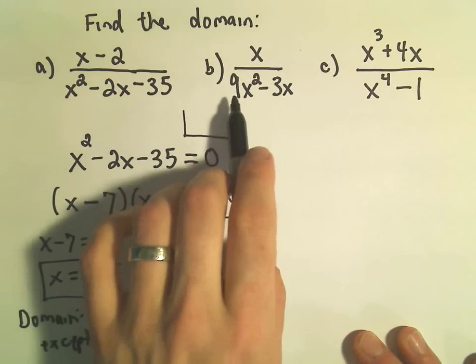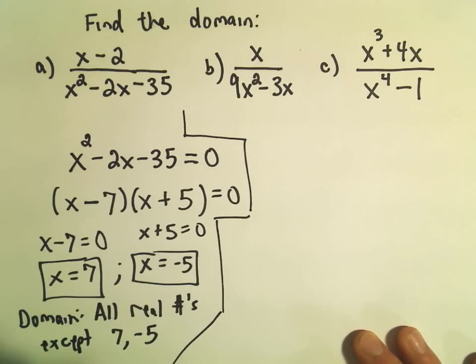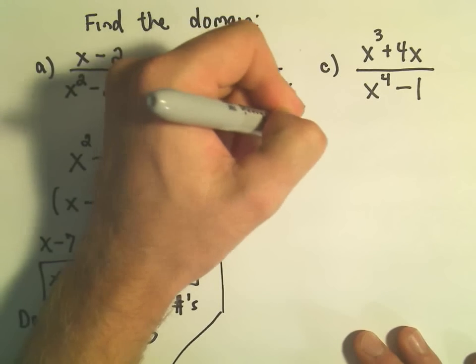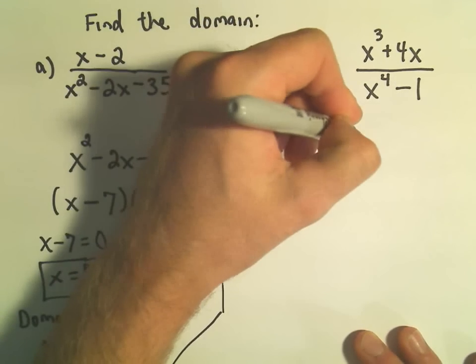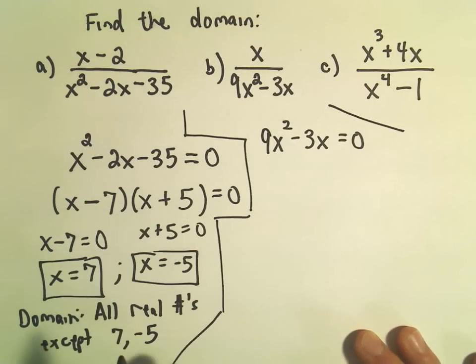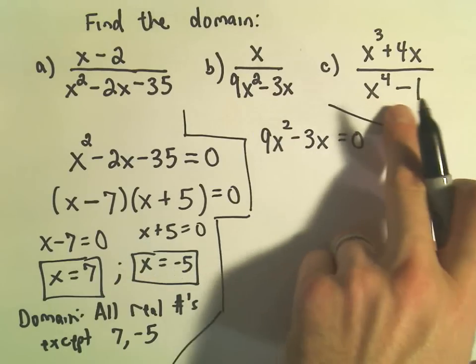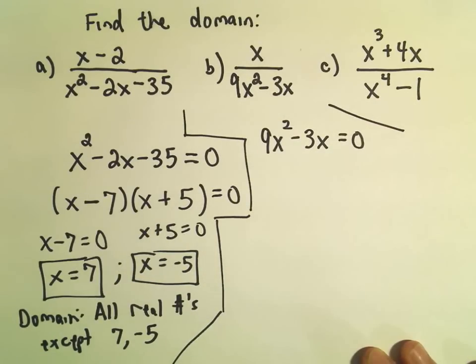So part b, we have x over (9x² - 3x). Again, I'm just going to take the denominator, 9x² - 3x, and I'm going to set that equal to zero. So again, notice they're all quadratics, or excuse me, the first two are quadratics. The last one is not quite quadratic, but it will still factor.